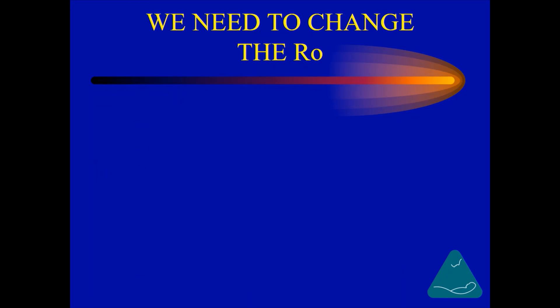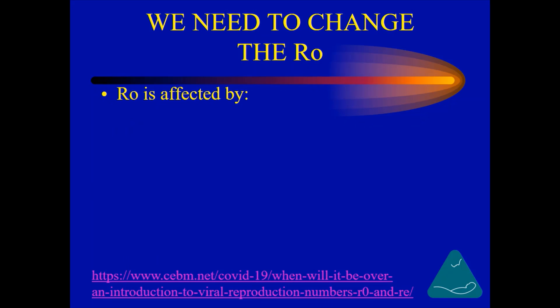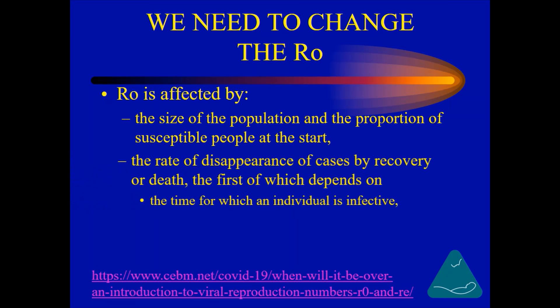What do we do? We need to change the R0. How do we do that? Remember that the R0 is the number of people an infected person infects. In order to change the R0, we need to understand what affects it. The R0 is affected by the size of the population and the proportion of susceptible people at the start, the rate of disappearance of cases by recovery or death — the first of which depends on the time for which an individual is infected — and the infectiousness of the organism.